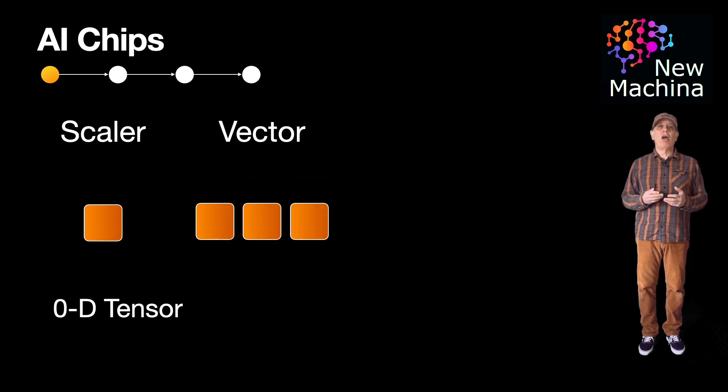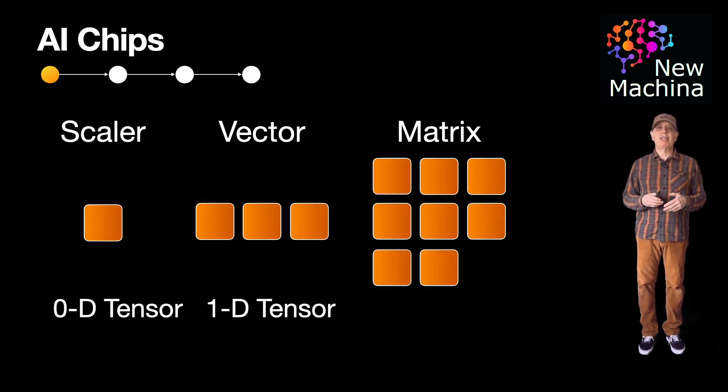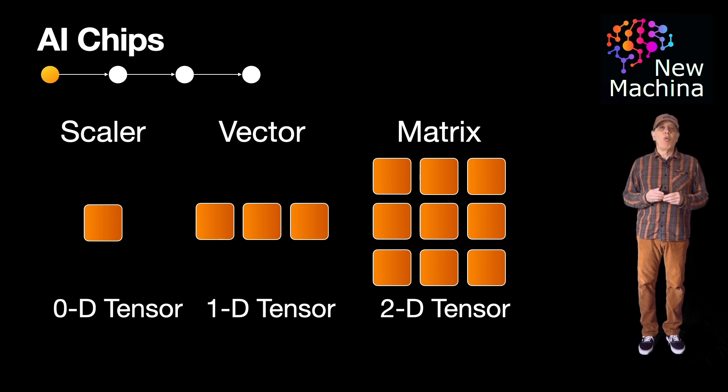Quick note, in this video I'll use the terms matrices and tensors quite often. Just so we're aligned, we normally think of matrices in two dimensions or three dimensions. You should think of a tensor as a generalized form of a scalar or vector or matrix going to n dimensions, where n can be a number in the hundreds or even thousands.